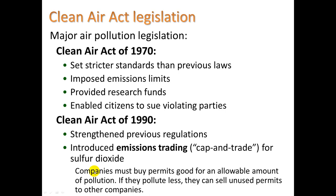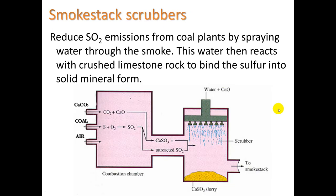Cap and trade means companies must buy permits that are good for an allowable amount of pollution. If they pollute less, they can sell unused permits to other companies. One technology is smokestack scrubbers, designed to reduce SO2 emissions from coal plants by spraying water through the smoke. This water then reacts with crushed limestone rock to bind the sulfur into a solid mineral form. The pollutants — containing carbon dioxide, calcium oxide, sulfur, and sulfur oxides — pass through, and the unreacted sulfur dioxide reacts with injected calcium oxide to form a calcium sulfate slurry, which you can put in the ground and keep that sulfur in mineral form, not in the air.